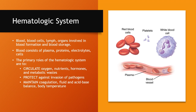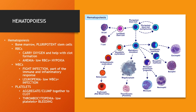The average adult has roughly 5 to 6 liters of blood in their vascular system. The heart circulates the total volume every minute, so the average adult cardiac output is 5 to 6 liters per minute. This is a critical concept because if the blood volume or the number of oxygen-carrying red blood cells decreases, the body compensates by increasing the heart rate to maintain adequate cardiac output and circulating oxygen volume.